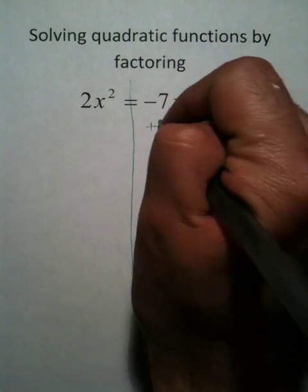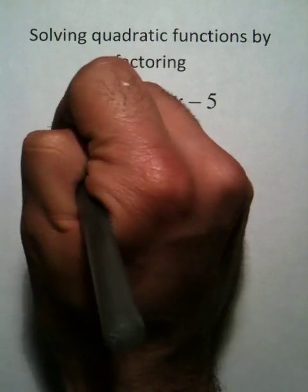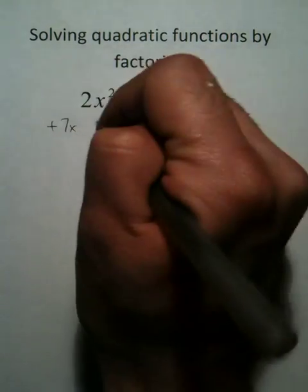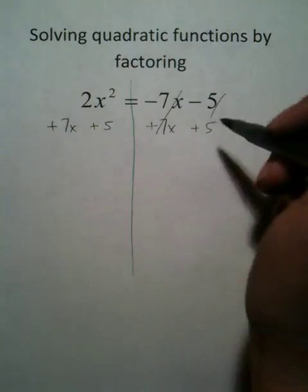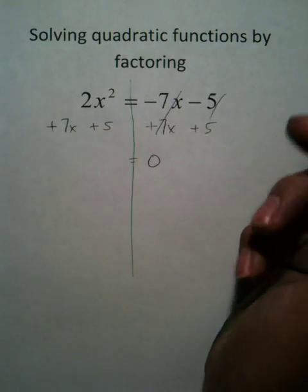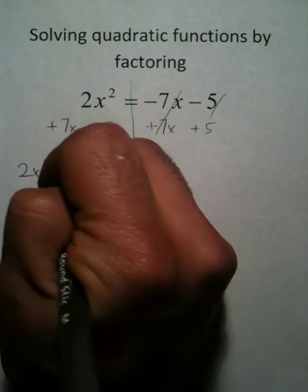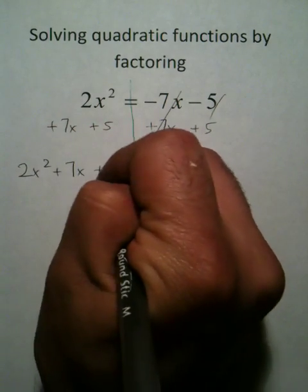I'm going to add 7x to both sides of the equation. I'm also going to add 5 to both sides of the equation. That way, I have 0 on this side. So now I have 2x squared plus 7x plus 5 equals 0.